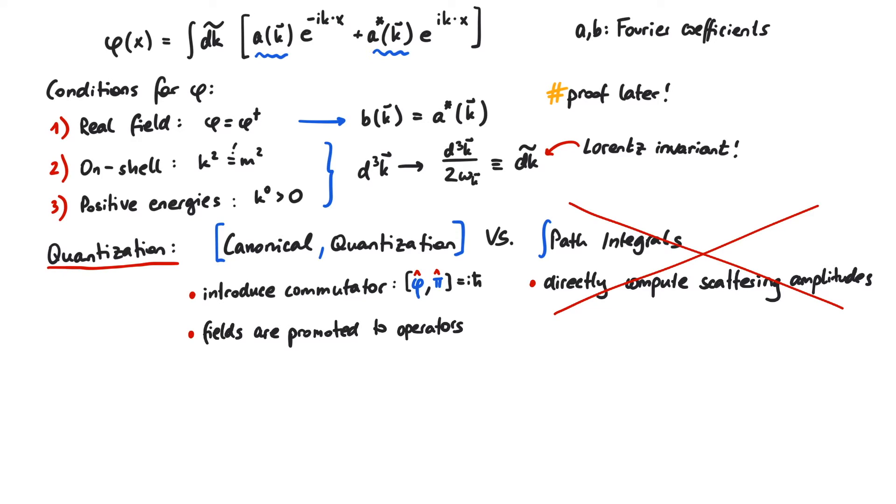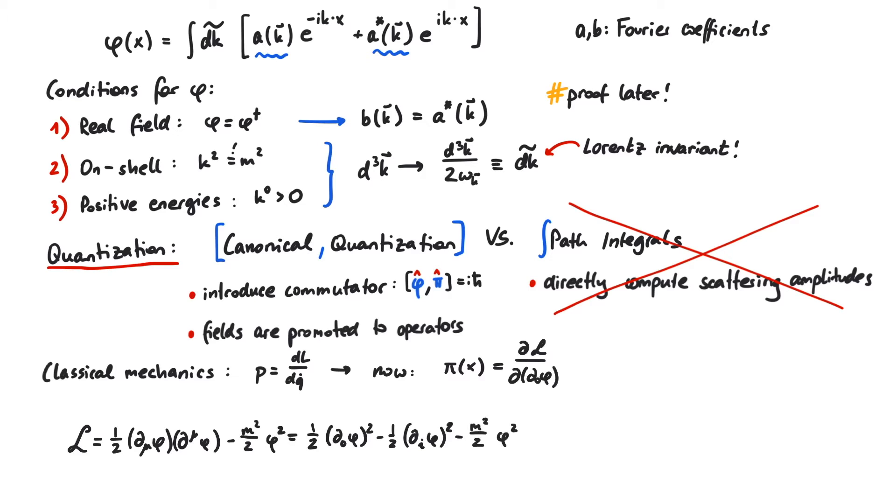So first we need to find out what this momentum field, pi, really is. If you remember classical mechanics, the conjugated momentum to the generalized coordinate q was given by the derivative of the Lagrangian with respect to the time derivative of q. So let's do exactly the same for our fields. We define pi to be the derivative of the Lagrangian density with respect to the zero derivative of phi. A quick look at the Lagrangian reveals that pi is the zero derivative of phi. Now it's easy to also write down an expression for pi.